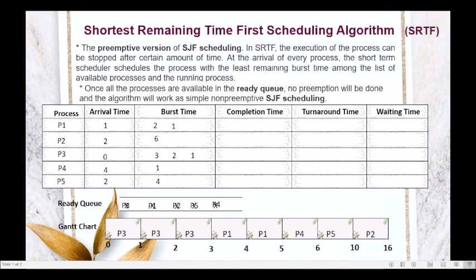We can now determine the completion time of each process from the Gantt chart: P1 completes at 5, P2 completes at 16, P3 completes at 3, P4 completes at 6, and P5 completes at 10.